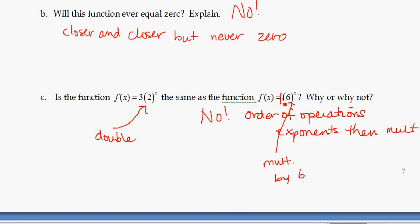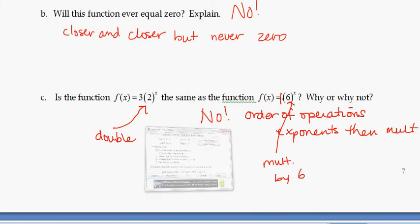So if we had a rich uncle, we would love it if he would give us the function 6 to the x instead of 2 times 3 to the x. But that's not, they're not the same. Certainly, they're not the same.